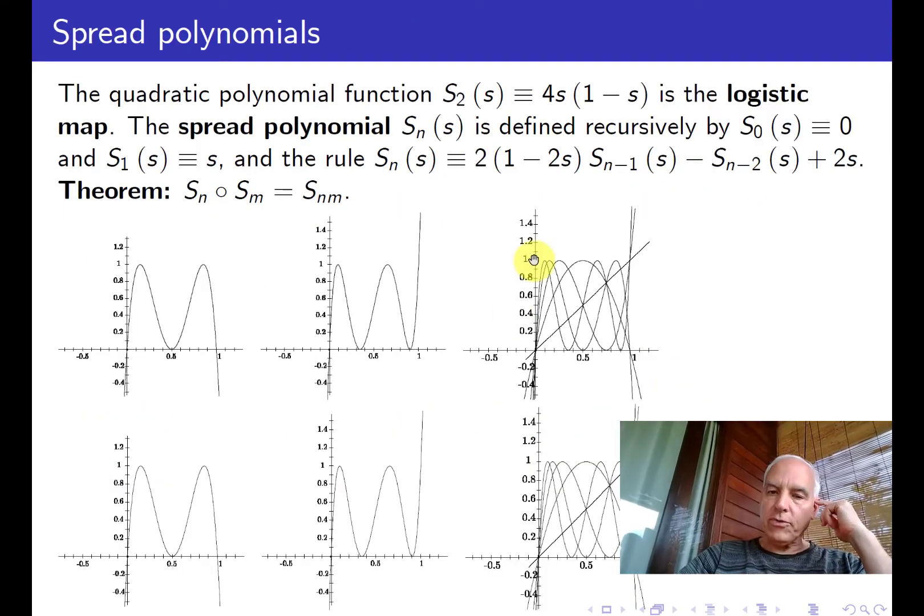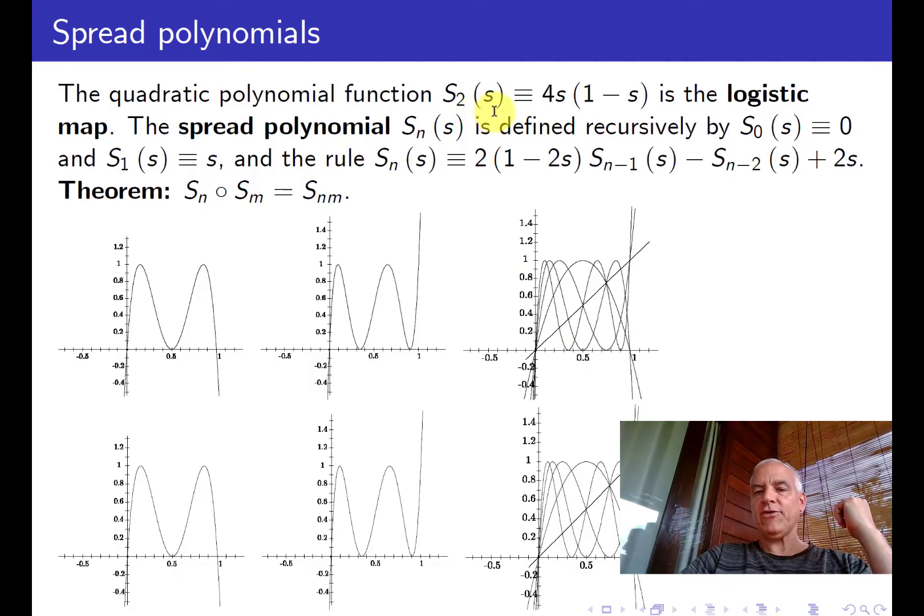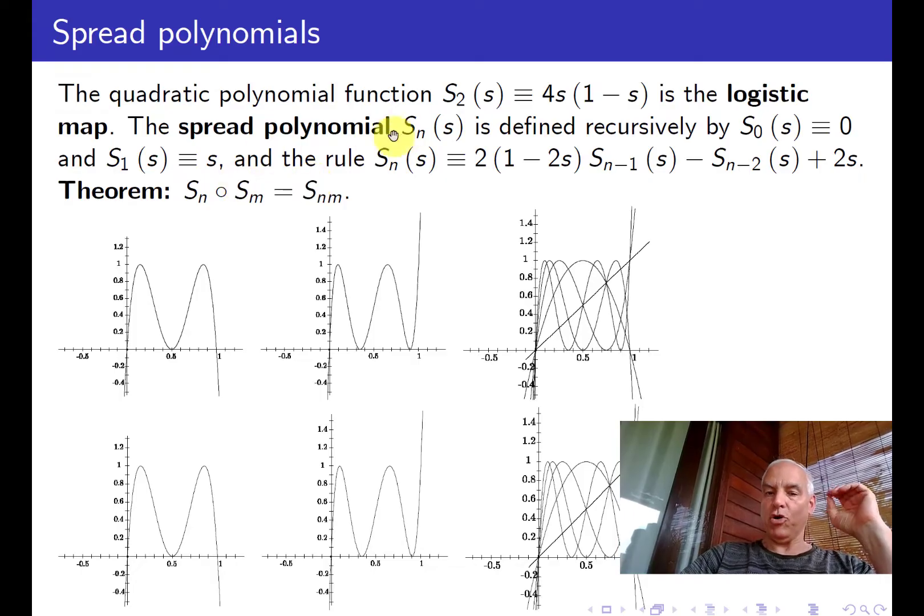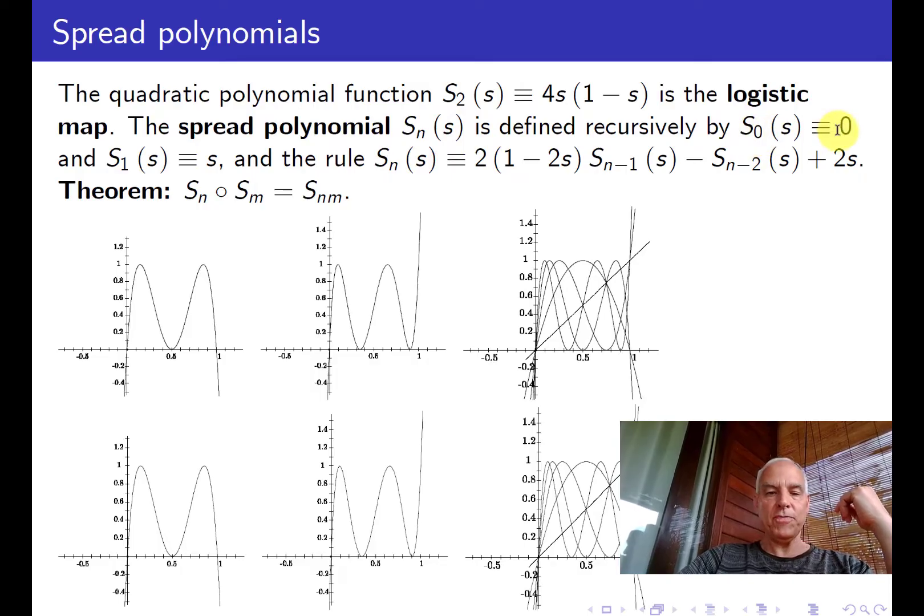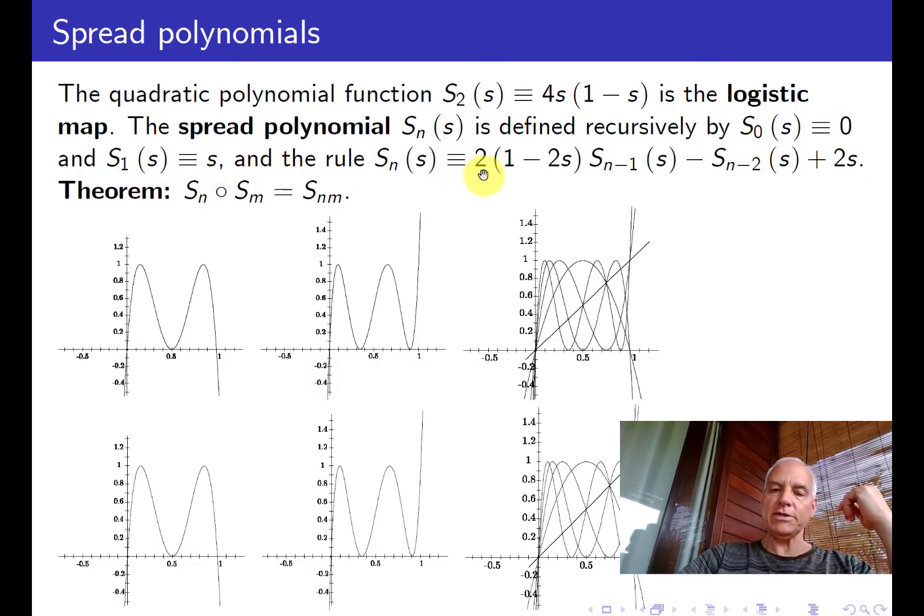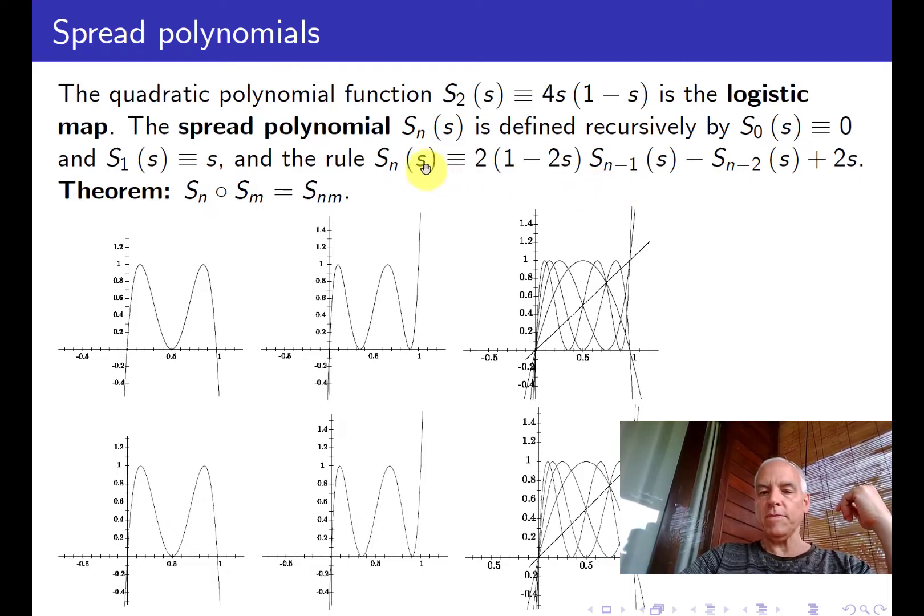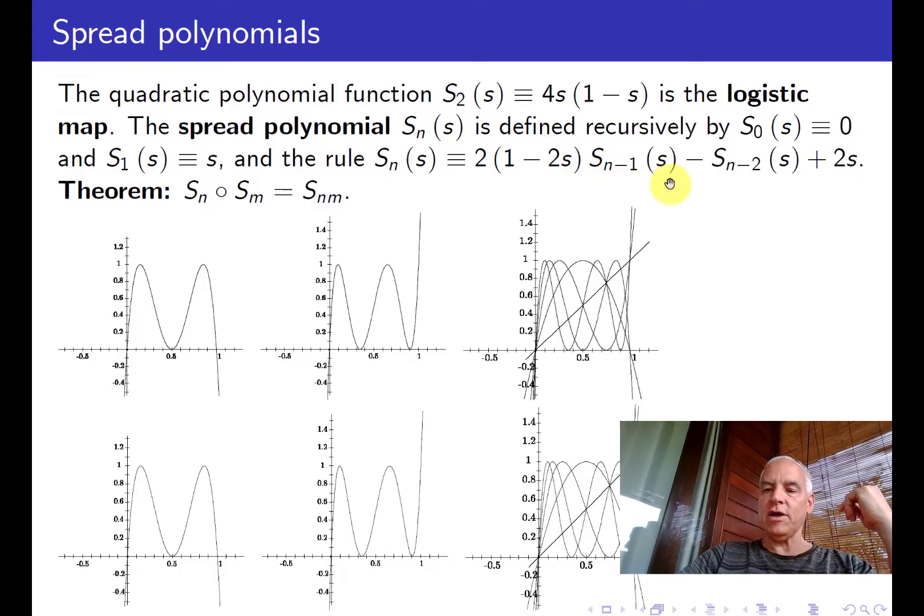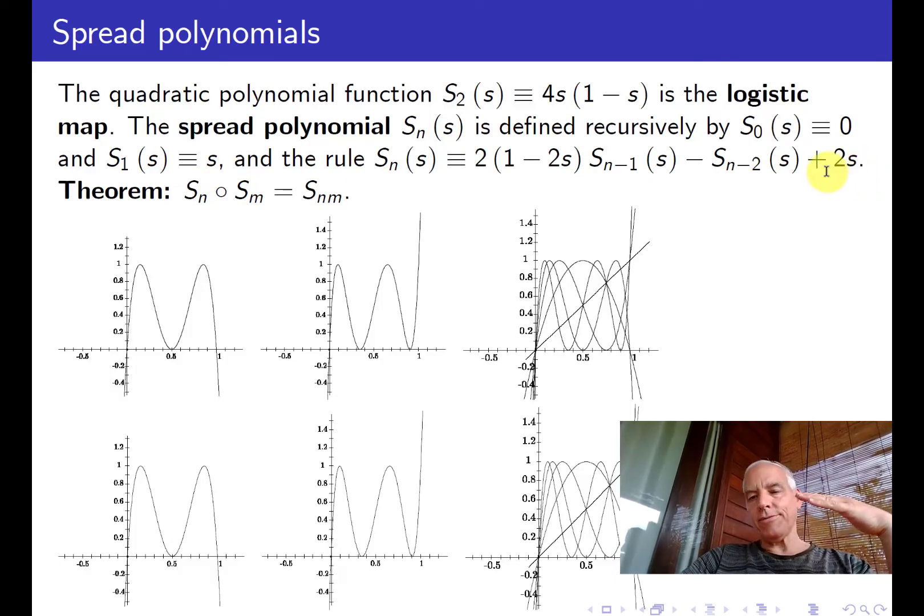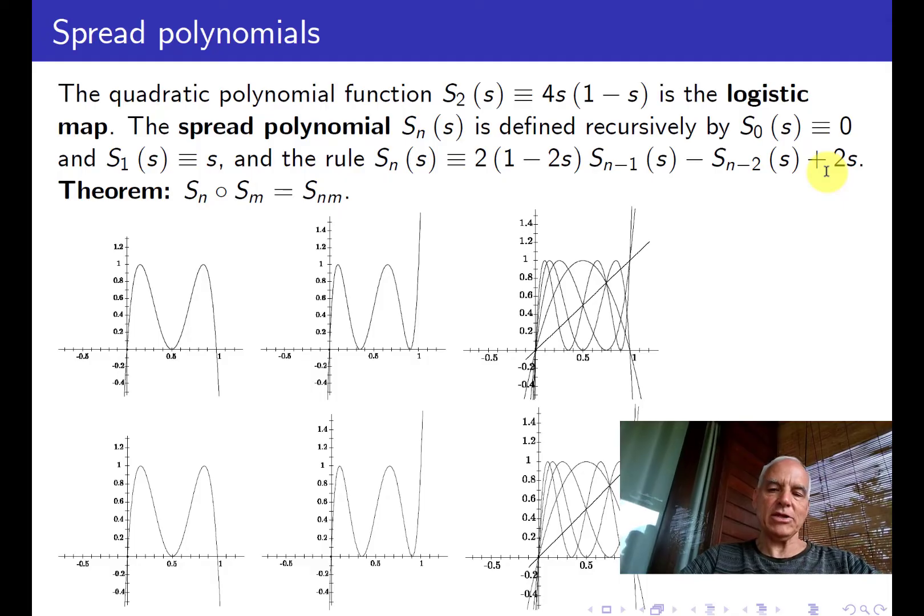More generally, we call this S₂(S). So the spread polynomial Sₙ(S) may be defined recursively by setting S₀(S) = 0 and S₁(S) = S. And then here is the recursive rule: Sₙ(S) = 2(1-2S)Sₙ₋₁(S) - Sₙ₋₂(S) + 2S. It shares some features of the Chebyshev polynomials of the first or second kind, but this plus 2S is a little bit different.